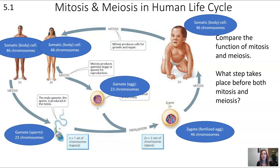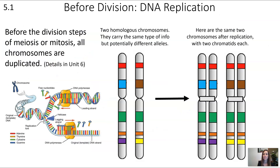Before the division step of meiosis, there's a step that takes place before both mitosis and meiosis — before the division processes. That step is DNA replication. We'll get into the details of DNA replication in a later unit, but for now: a chromosome is a unique piece of information. Homologous chromosomes carry similar but not identical information. When you have replication, you end up with two copies of each chromosome. So in humans, if we have 46 chromosomes, after replication we will have 92 chromatids.